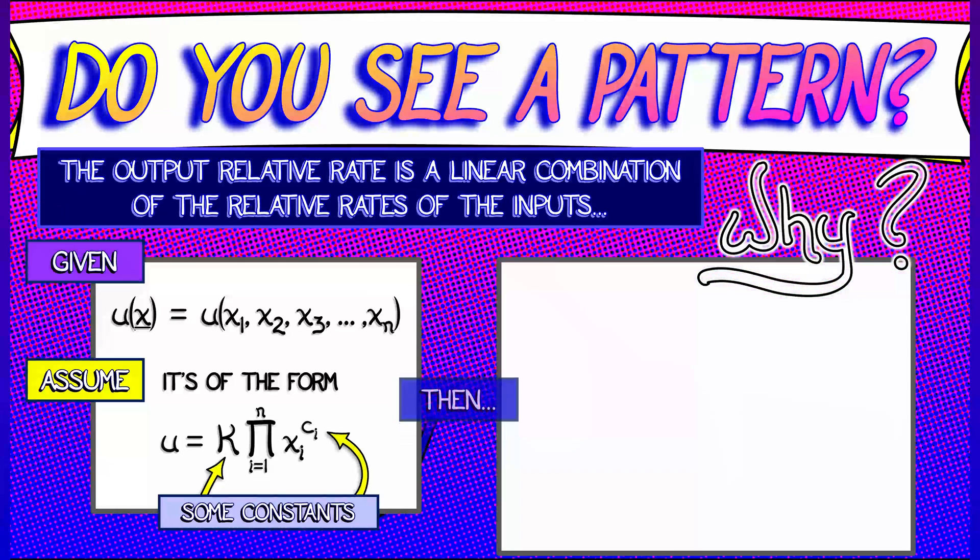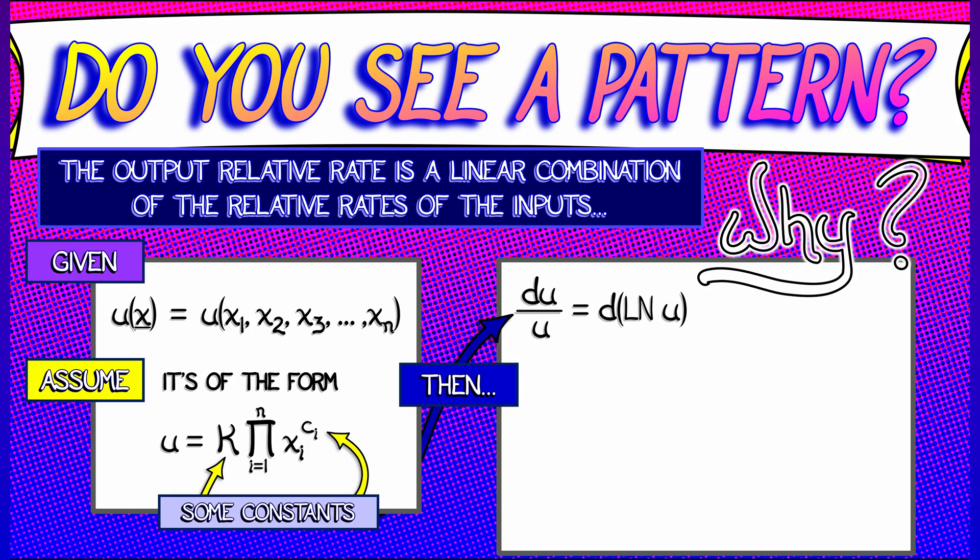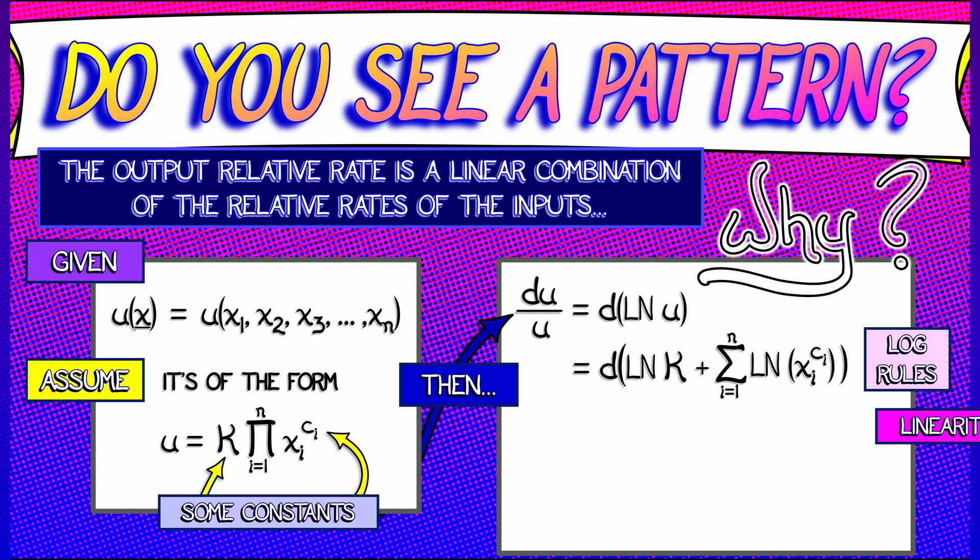Now, compute the relative rate du over u. And remember, that's the derivative of the natural log of u. Why is that important? Now we're going to do some log rules. The log of the product is the sum of the logs. And now I differentiate that using the fact that the derivative is linear. What's the derivative of log of a constant? It's zero. So forget about that k.